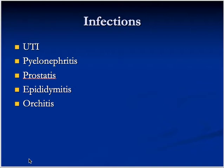Complicated UTIs occur when there is some underlying abnormality — like some anatomical problem of the genitourinary system. In that case, if there is an anatomical abnormality, they correct it, because the infection occurs as a result of that anatomical abnormality.